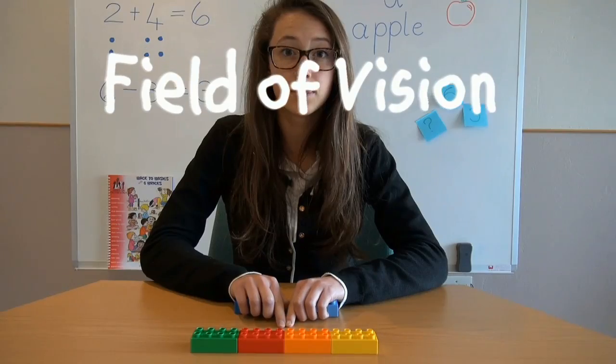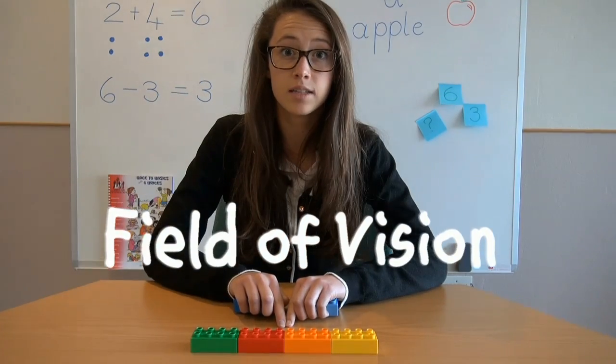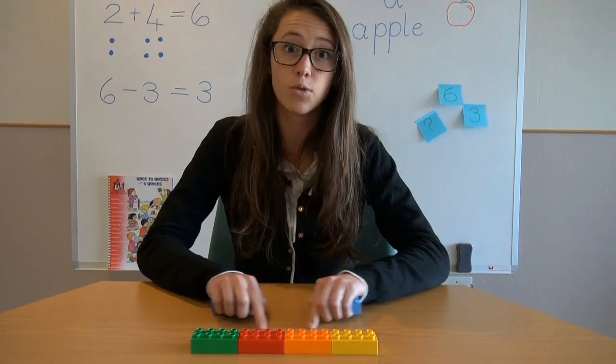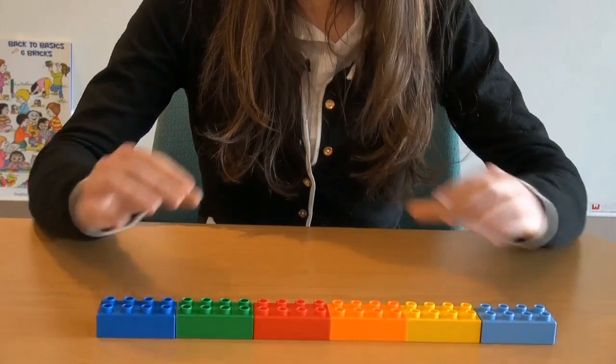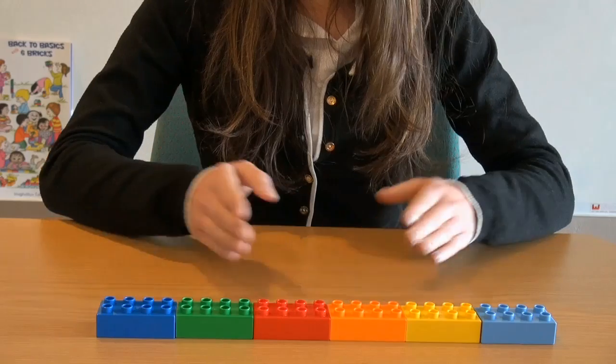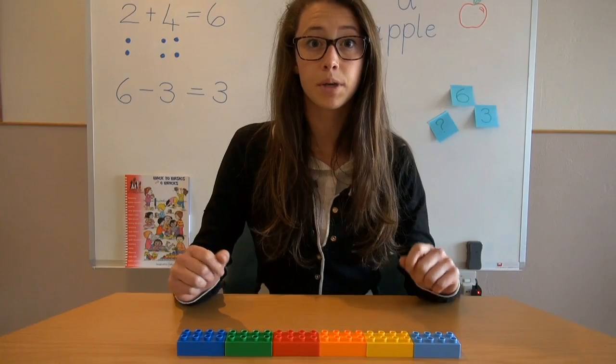The field of vision of the child is roughly the same as these four Duplo bricks. By adding the fifth and sixth brick and getting children to play outside their range of vision, because these bricks are outside the field of vision...